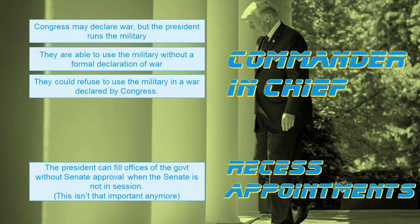Another check, though less important now than it used to be, is recess appointments. The president needs to fill offices across the government, which normally requires Senate approval. However, the president can make recess appointments — appointing acting officials like an acting secretary of state — without Senate approval when the Senate is not in session. This is much less common today than it used to be.